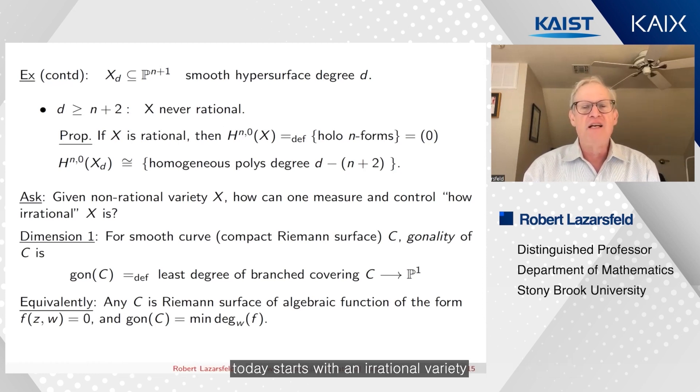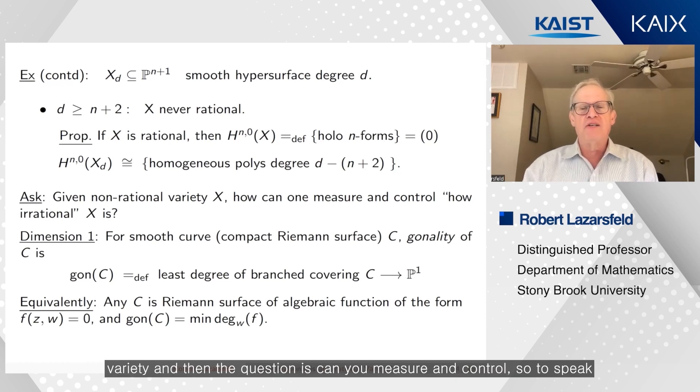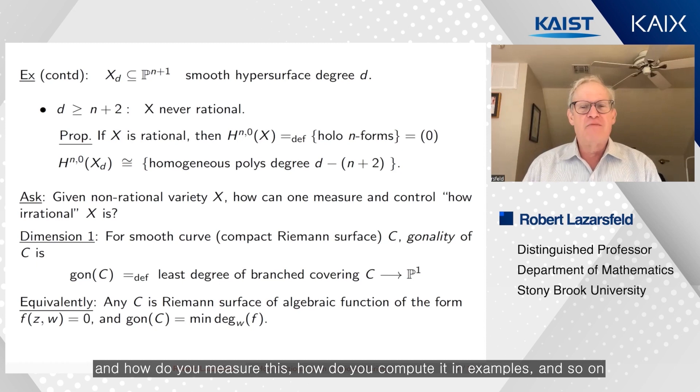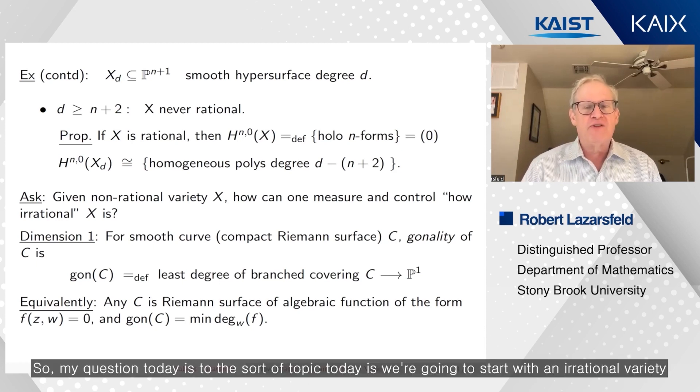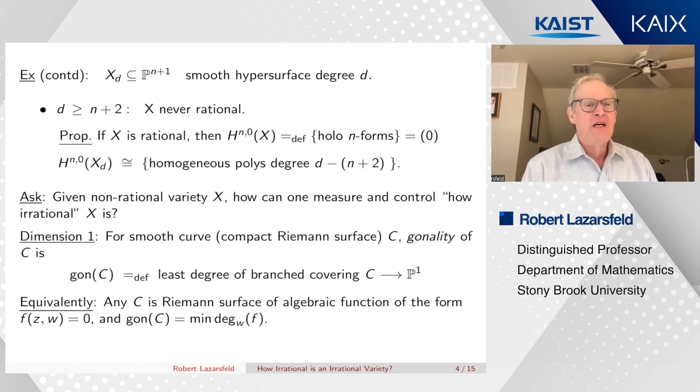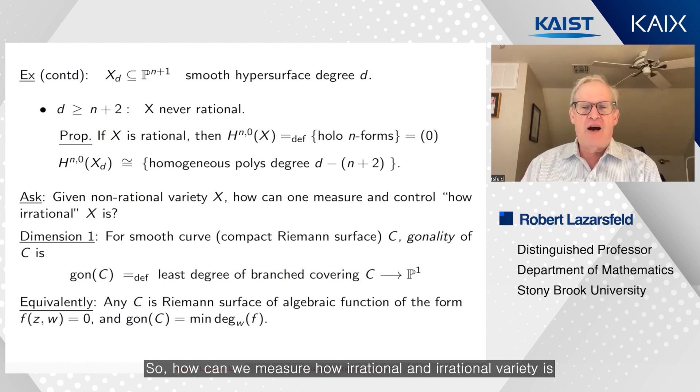So the question or the body circle of ideas I want to talk about today starts with an irrational variety. And then the question is, can you measure and control, so to speak, how irrational it is? So can you say that one variety is somehow more irrational than another one? And how do you measure this? How do you compute it in examples?